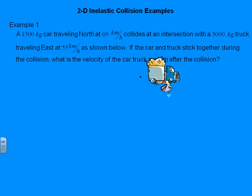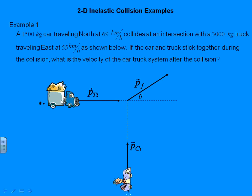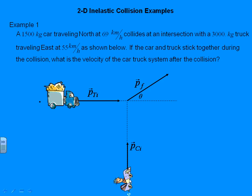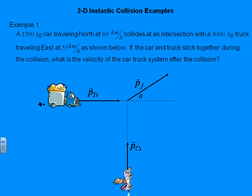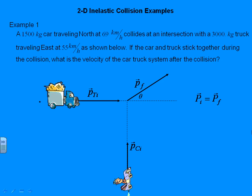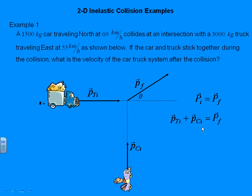First of all, let's draw a little diagram. Here is the truck — we're going to call that momentum P-sub-TI: T for truck, I for initial. Here's the initial momentum of the car traveling north. They hit one another and go off with a final momentum at an angle theta. According to the law of conservation of momentum, the initial momentum must equal the final momentum of the system, which is the sum of the momenta of the truck and the car.